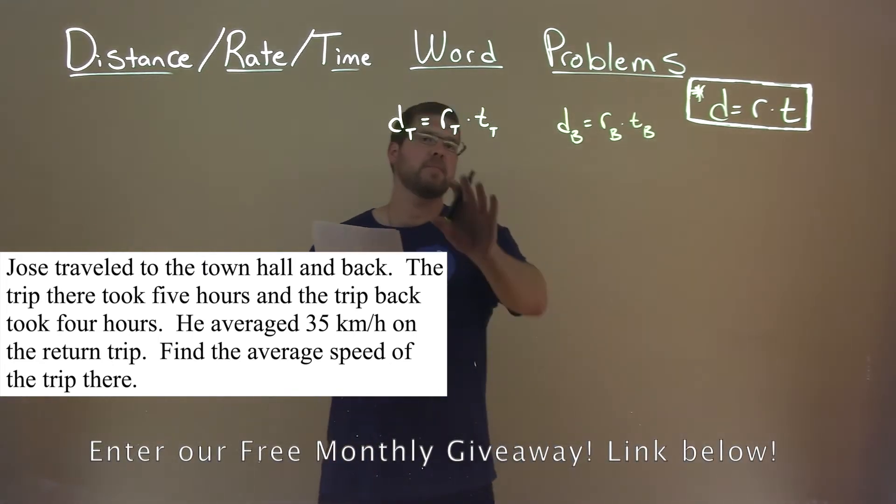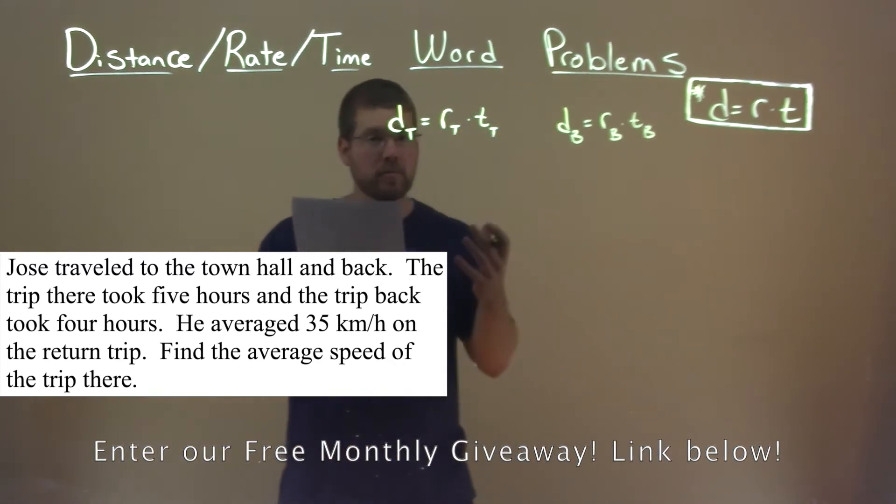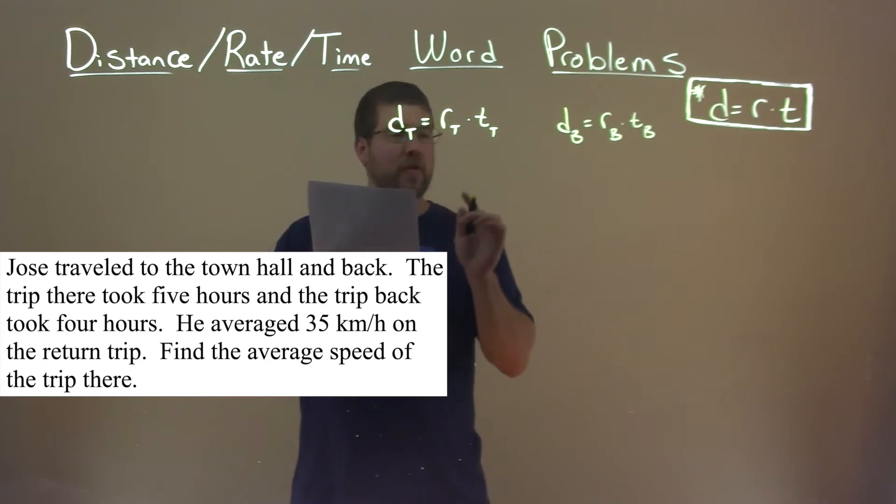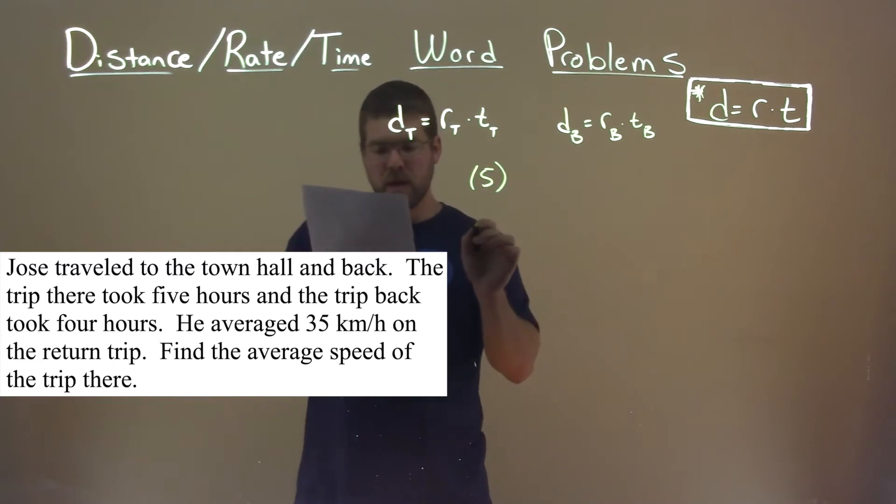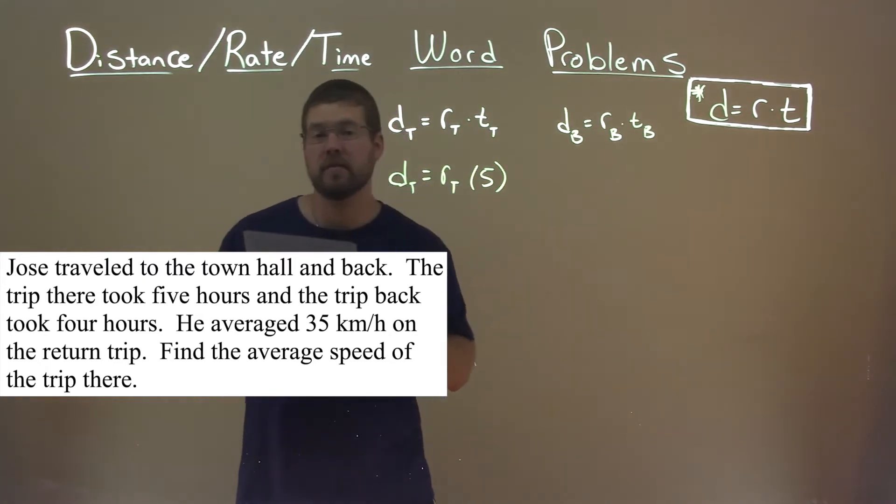So now we're going to take these two formulas and plug in what we can from our problem. They tell us that the trip took five hours there, so t sub t is five. And we want to find the average speed there, r of t.